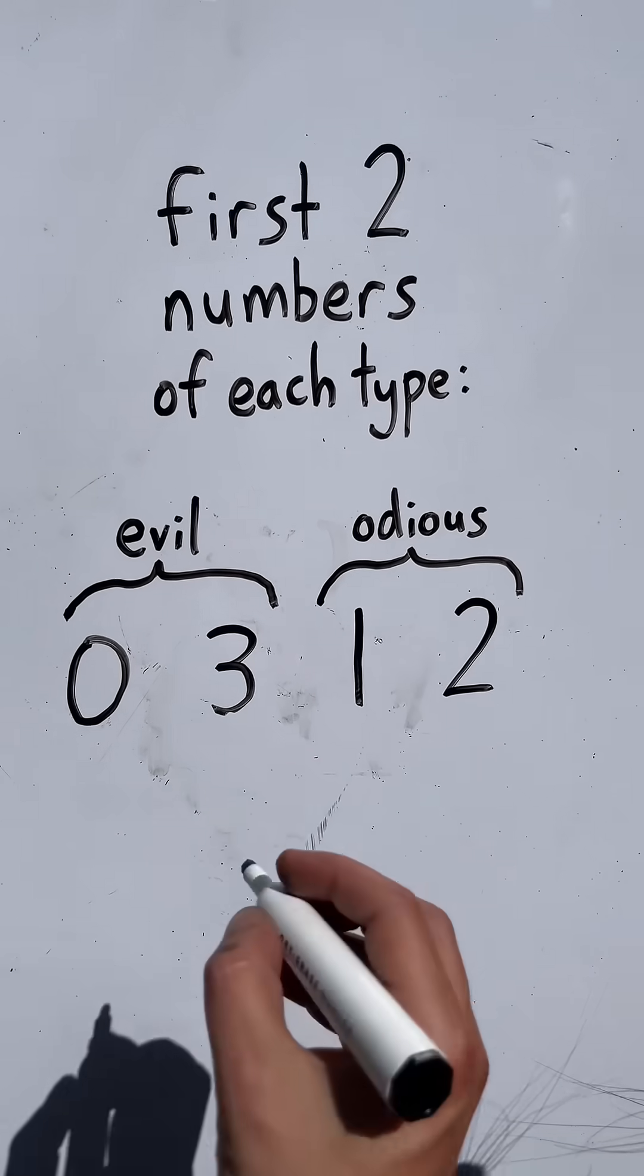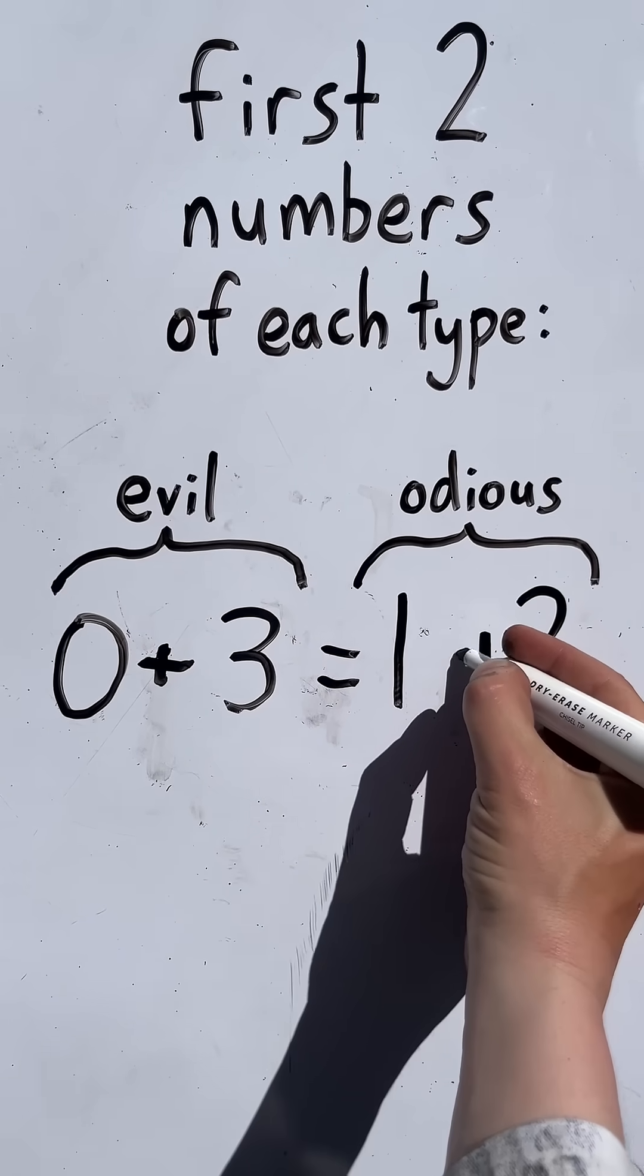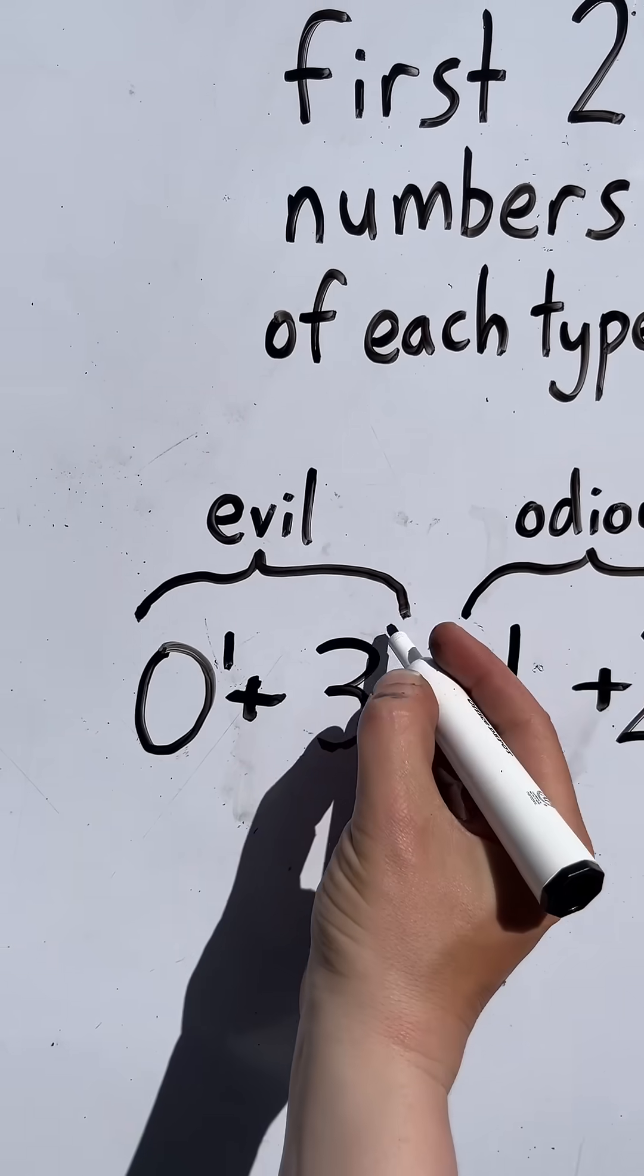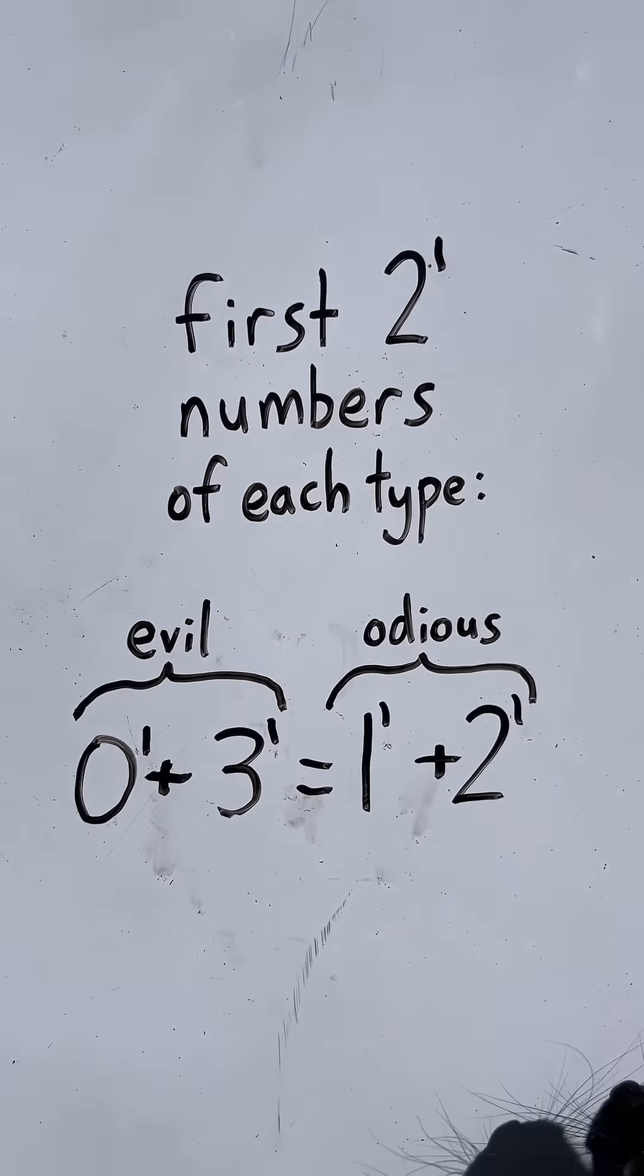Now if I take the first two evil numbers and add them together, I get the same result as if I add the first two odious numbers together. And let's note that I'm adding first powers of these numbers, and I added 2 to the first power amount of each type.